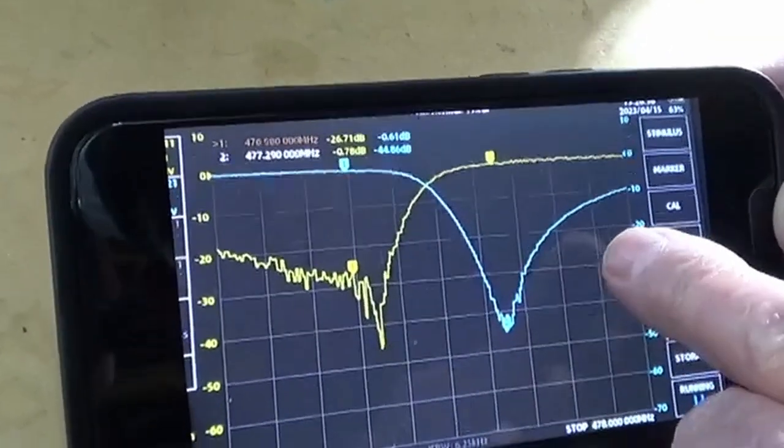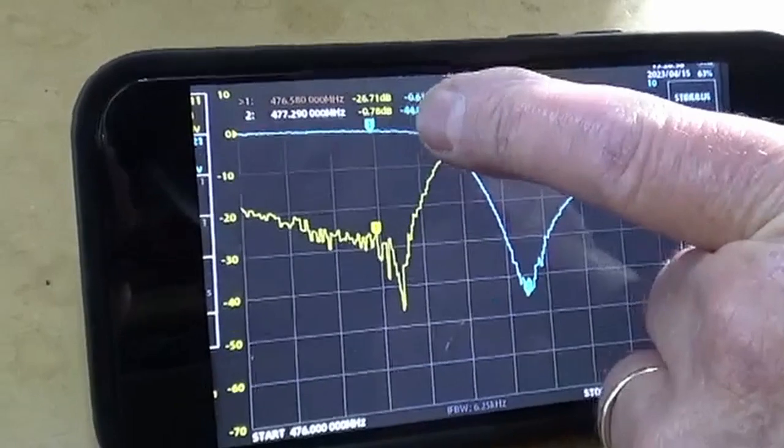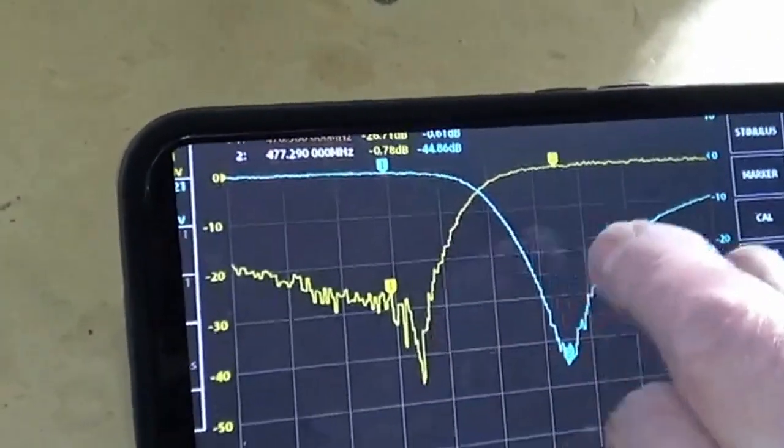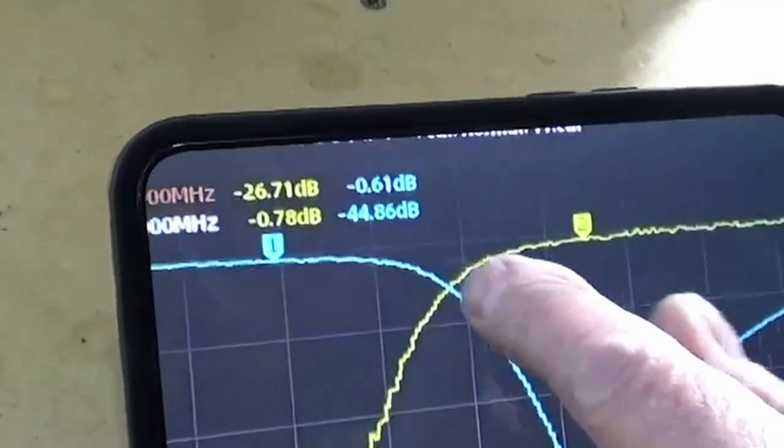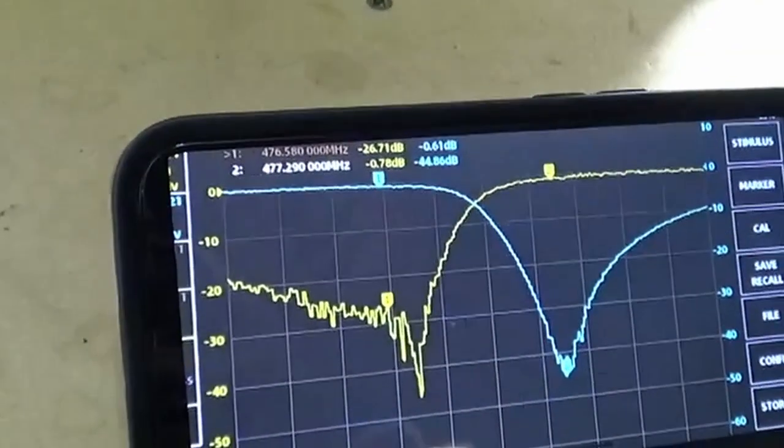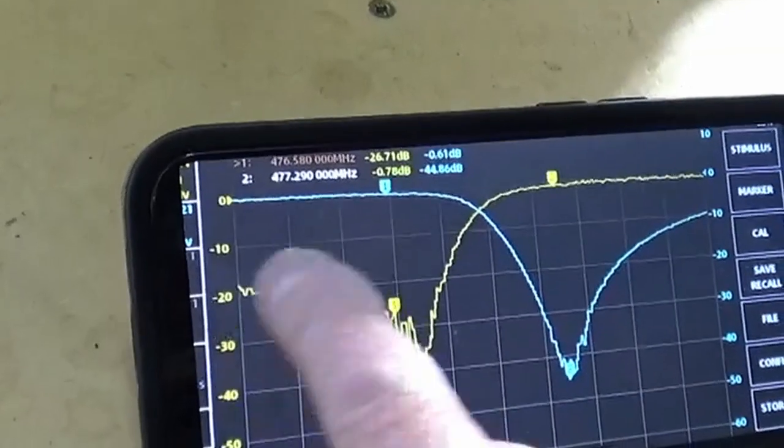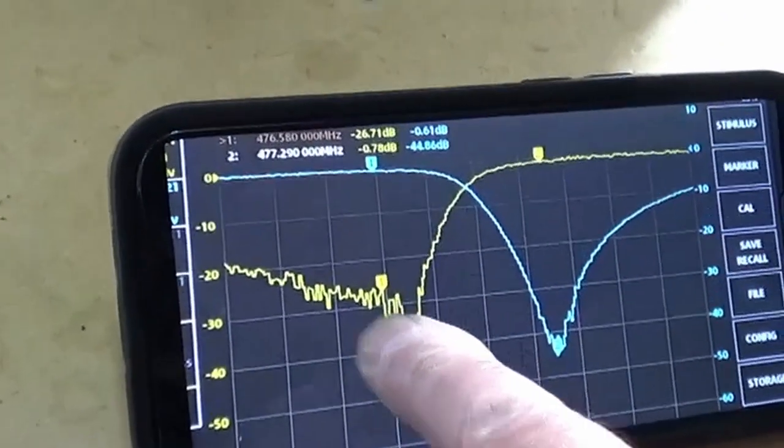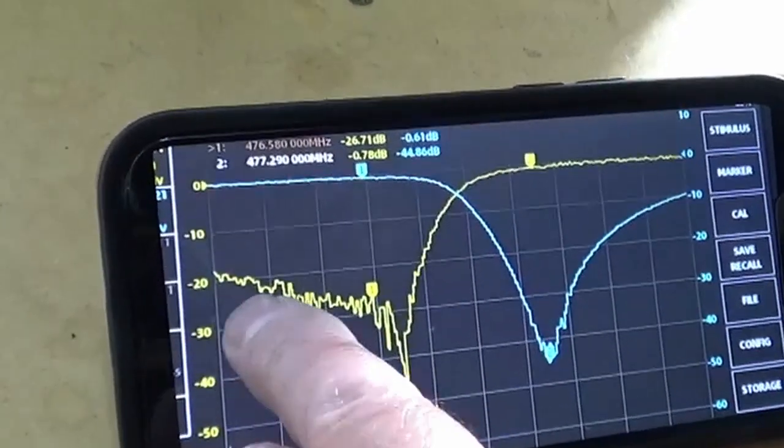Now this is the low pass, so you can see in the blue there, there's our insertion loss, which is 0.61 of a dB, and our notch again is nearly 45 dB. Again, it's a little bit coarse there on the plot. It could be a little better, that's our return loss there, but hey, that's pretty good.